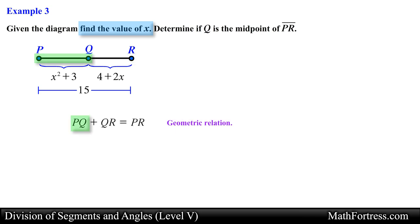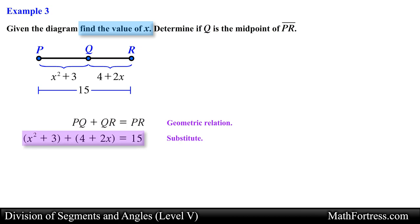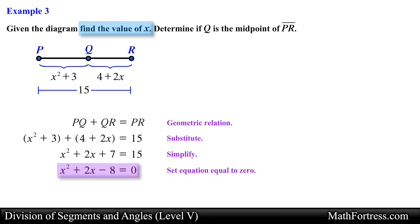The length of segment PQ plus the length of segment QR equals the length of segment PR. We substitute the algebraic and numerical expressions into this relation to obtain an equation. Solving for x, we notice we are faced with a quadratic equation. We move every term to one side so that we can set the equation equal to 0, adding like terms along the way, and write the quadratic in standard form.